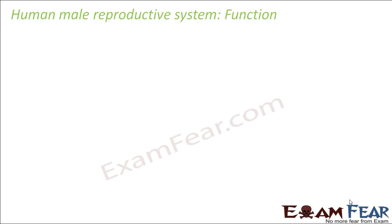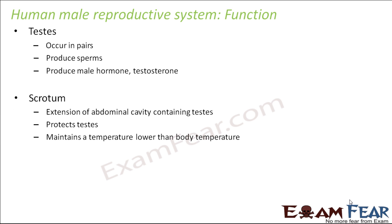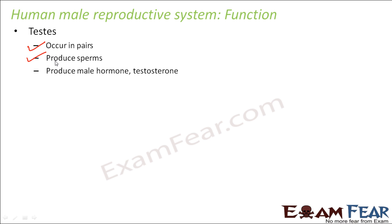Now let us talk about the function of each of these parts. Testis occurs in pairs — there is one testis present on each side of the penis — and its main job is to produce sperms. For sperm production, a temperature a little lower than the body temperature is required, and that is why the testis is located outside the body in a separate structure called scrotum. Inside that scrotum the testis is located, so that the appropriate temperature for sperm production can be maintained.